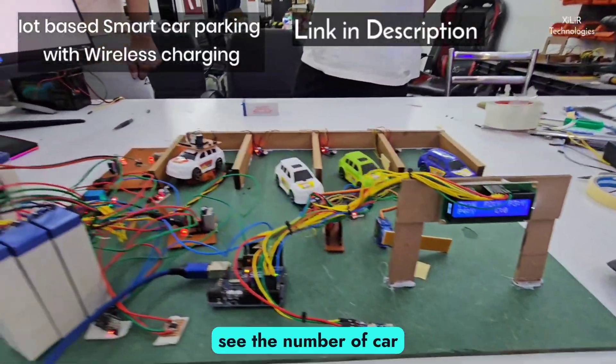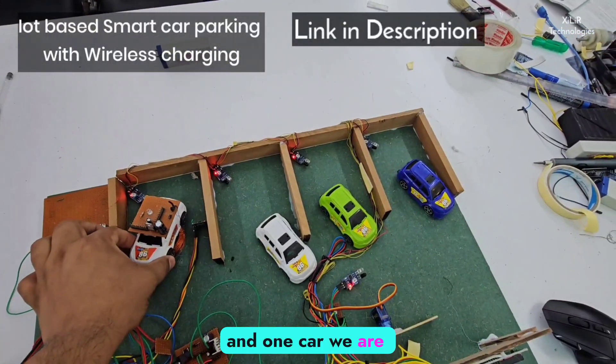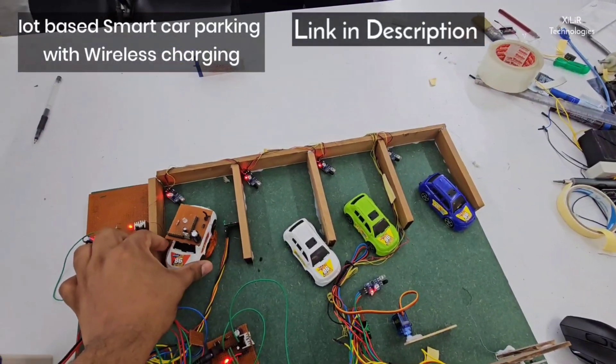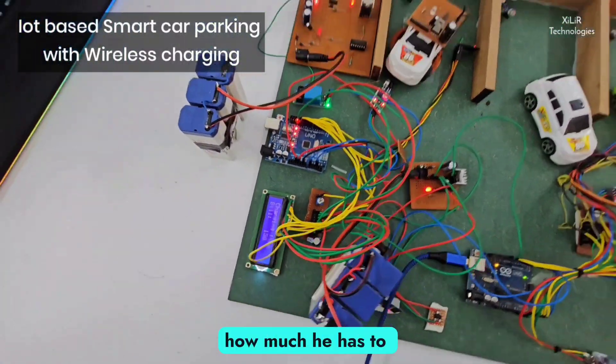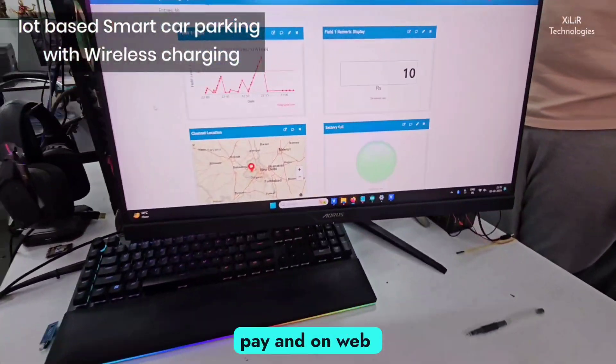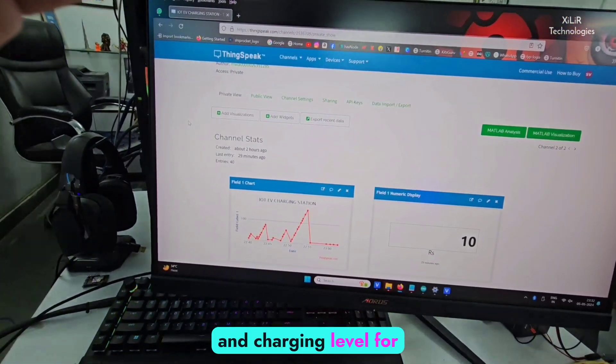LCD on which we can see the number of car present inside. And one car we are showing it as an EV car so it is charging wirelessly and on LCD we can see the bill how much he has to pay and on web server we can see amount and charging level for battery.